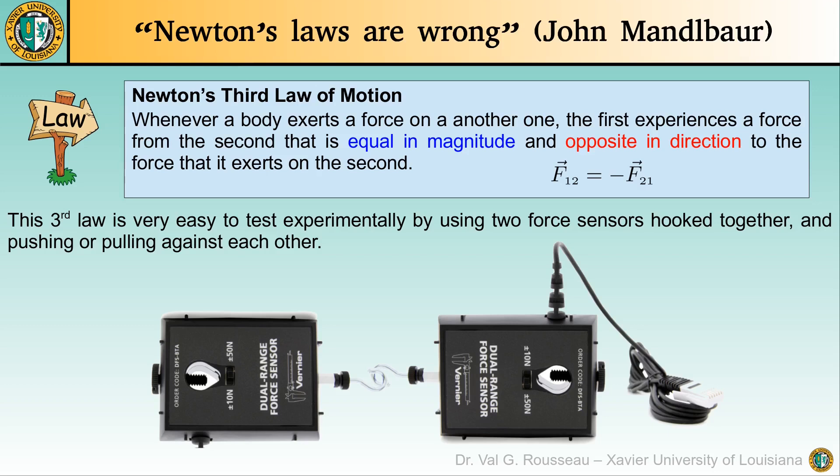We can easily test this law by using two force sensors that are hooked together. When we use the left sensor to pull on the right one, the right one will measure a force. We can check whether the left one also measures a force or not, and if yes, we can measure the magnitude of that reaction force.